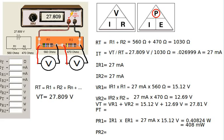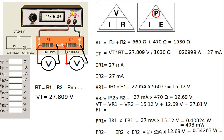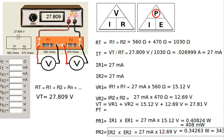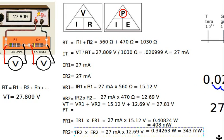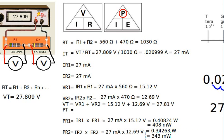For resistor 2, we multiply the current through R2 by the voltage across R2: 27 milliamperes times 12.69 volts gives us 0.342 watts, which equals 343 milliwatts when we move the decimal point three places to the right to convert from watts to milliwatts.